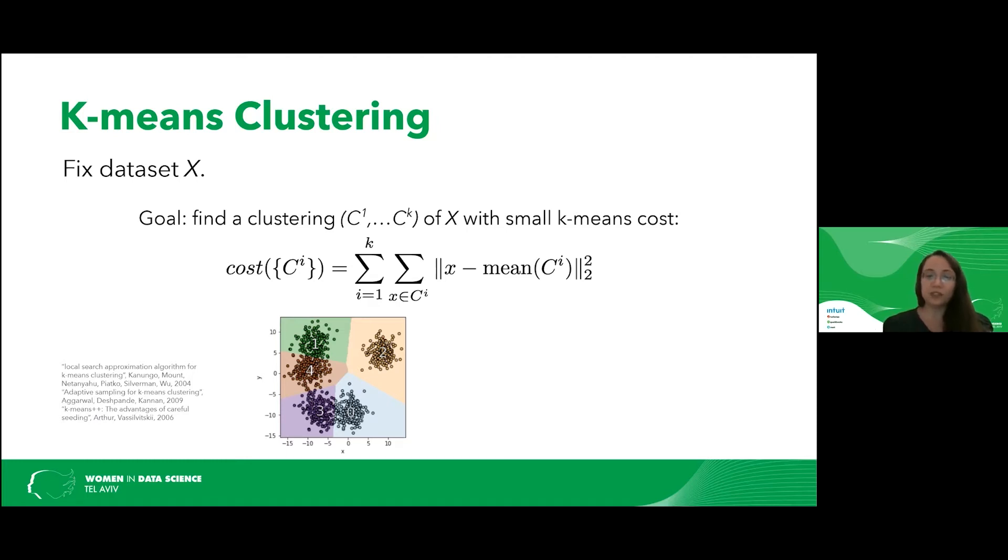What we see in this figure is a data set with an optimal k-means clustering into five parts. So notice that this is not really explainable, because the cluster identity depends on many features. So in this case, there are only two features, x and y, so it's not that bad, but more generally when it's high dimensional, small decision tree is just impossible.